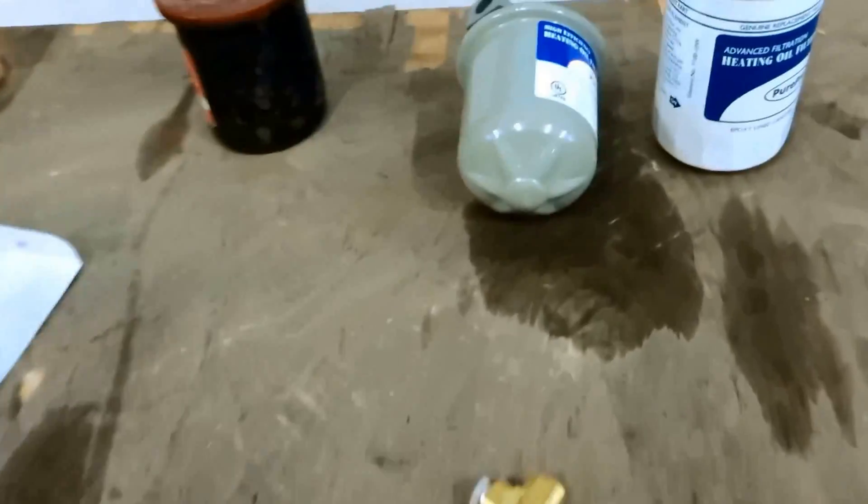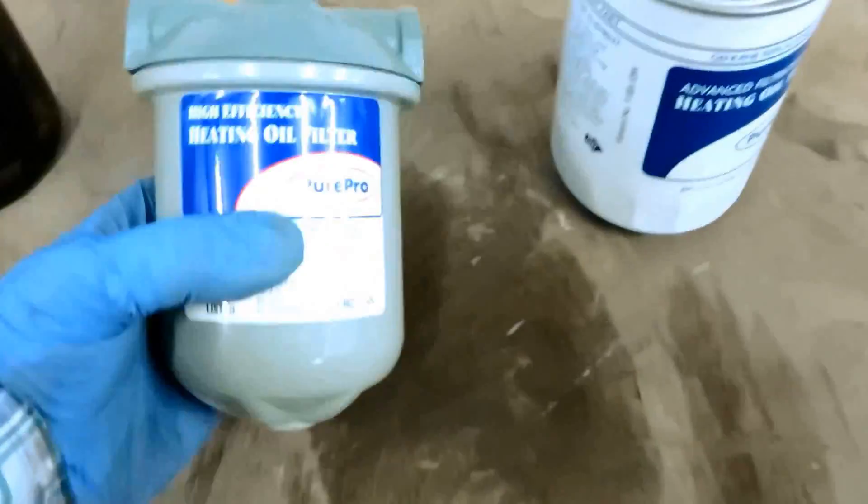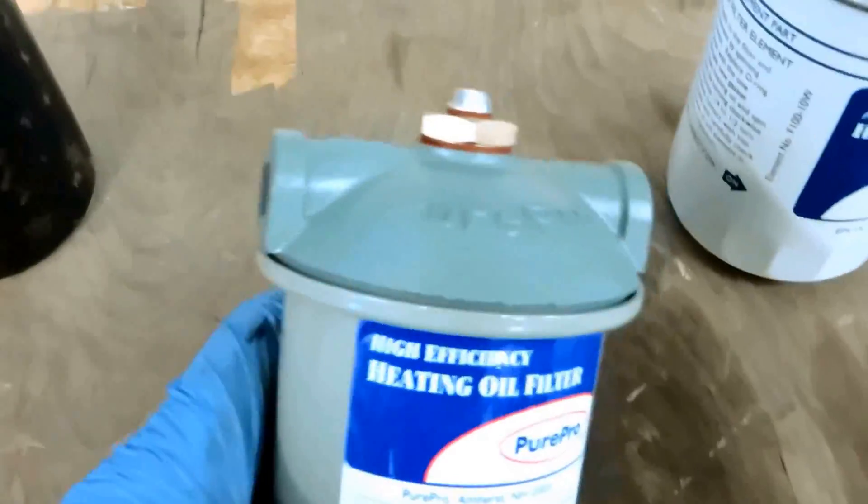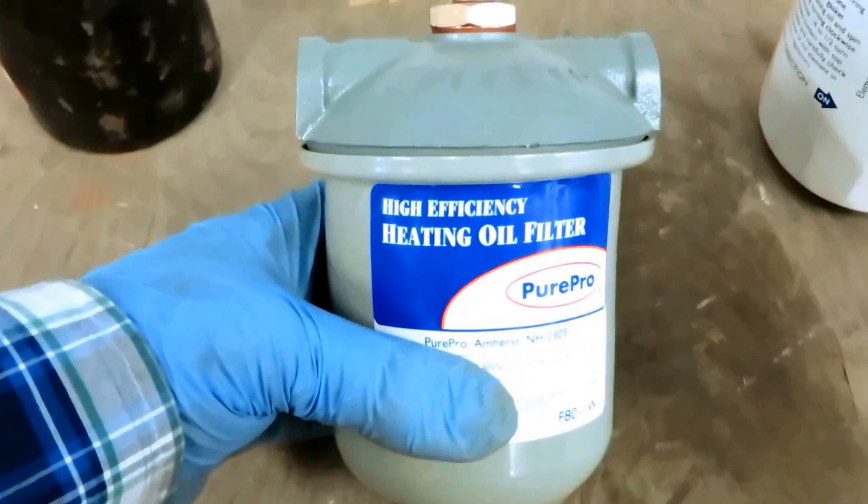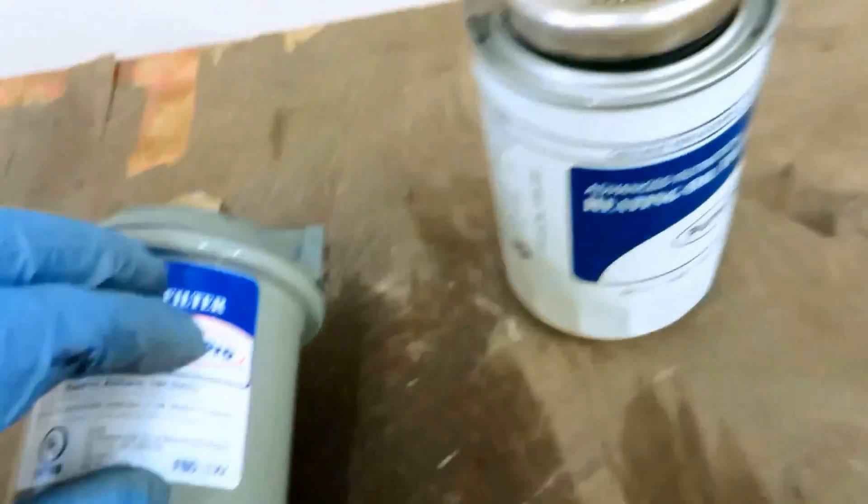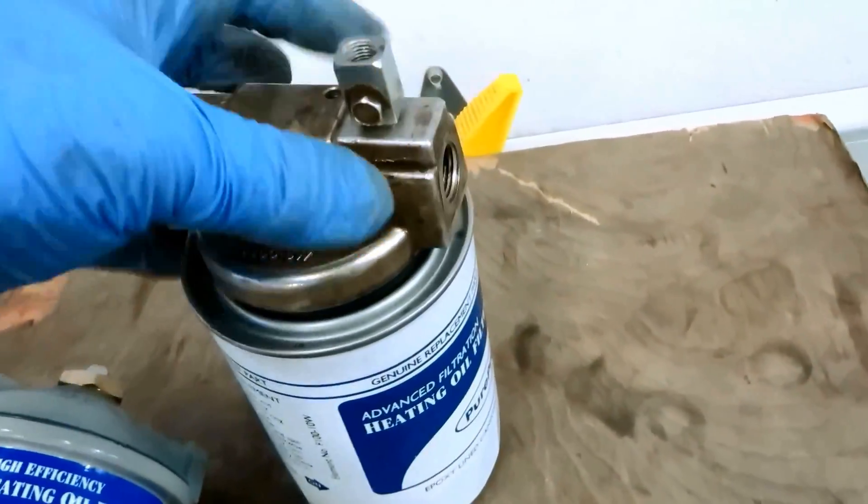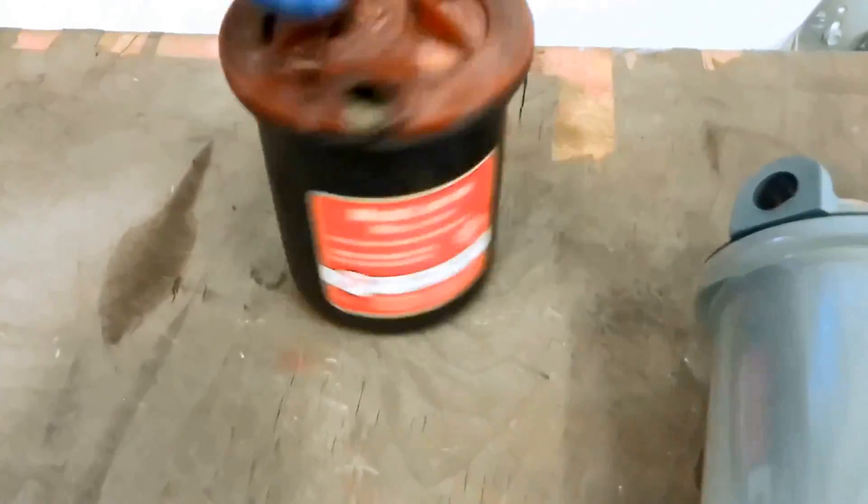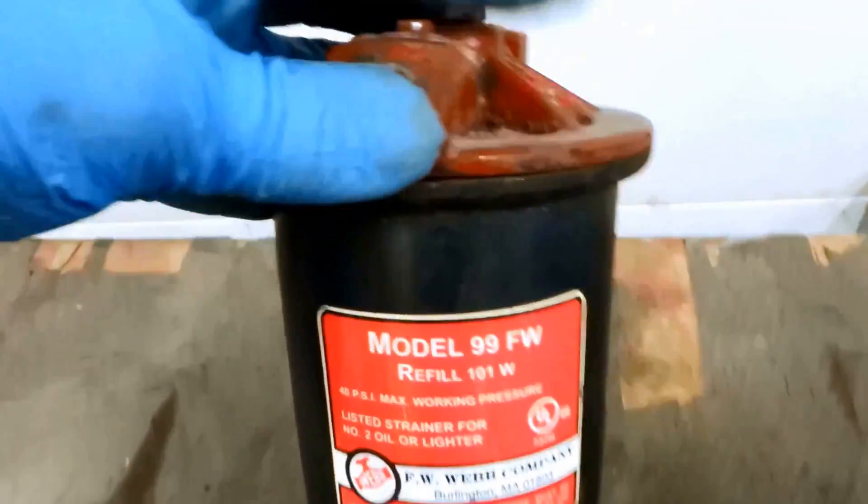Alright guys, a couple of different filters here. This is what I call an F4, which is the most common filter you'd find at the tank. This backs off and you change the cartridge. This one's a screw-on garb type. This one here is a 99, which is kind of a rare big cartridge.